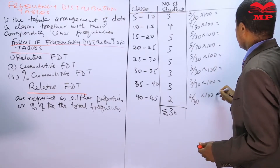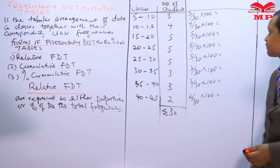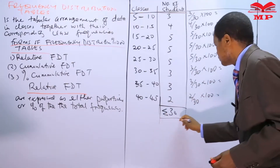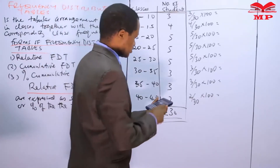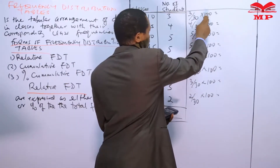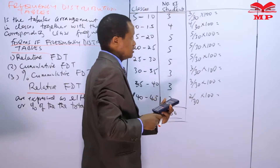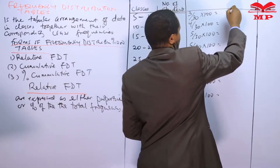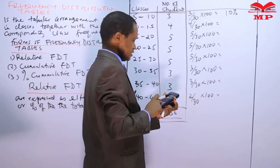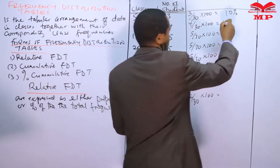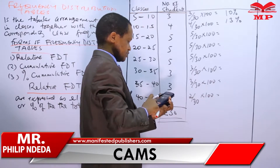What we have done is convert the frequencies as percentage values of the total. Using the calculator: the first one, 3 divided by 30 times 100, is 10 percent. Then 4 divided by 30 times 100 is 13 percent. Then 5 divided by 30 times 100 is approximately 17 percent.